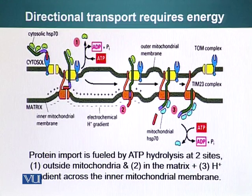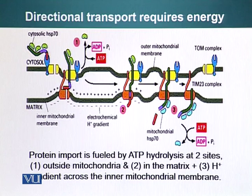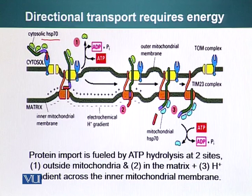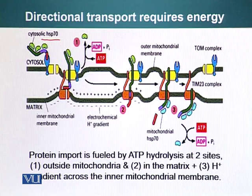That requirement is fulfilled by three components. First, there are special proteins present in the cytoplasm — in this case, HSP70 (heat shock protein 70). These proteins help keep the protein with its signal sequence in a linear configuration so it can be imported into mitochondria. This process also costs energy to keep the protein from folding on itself.